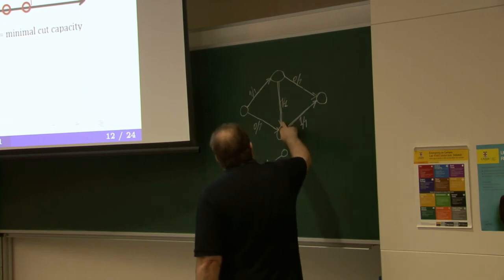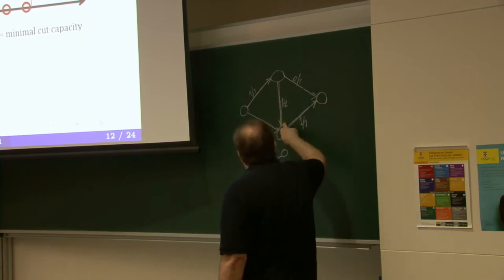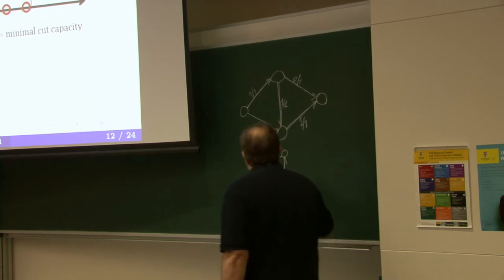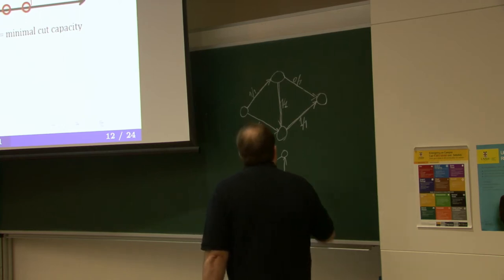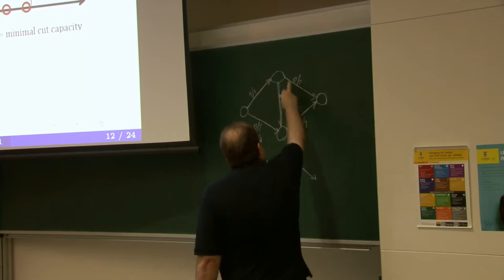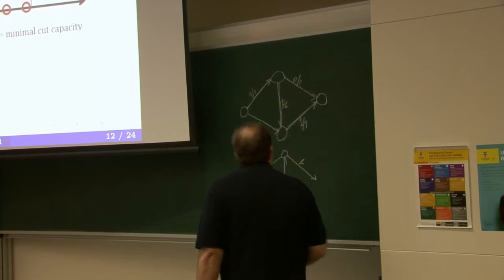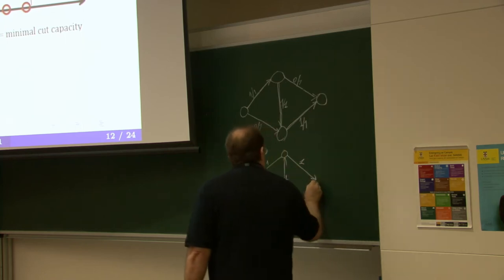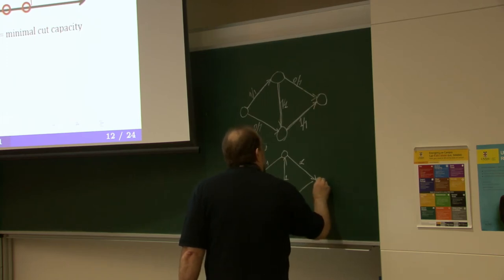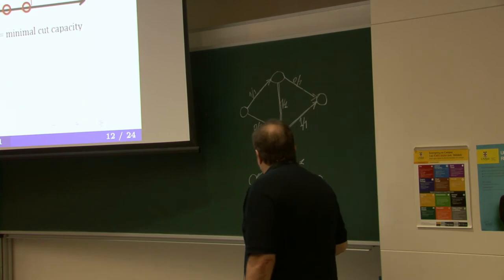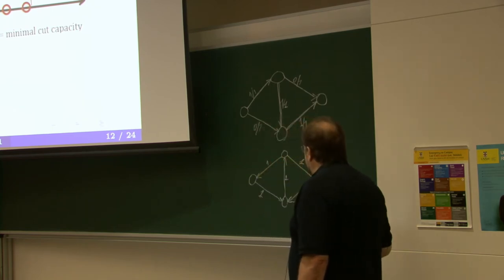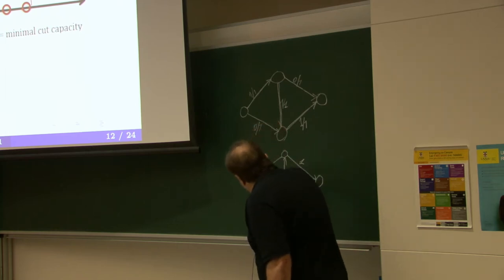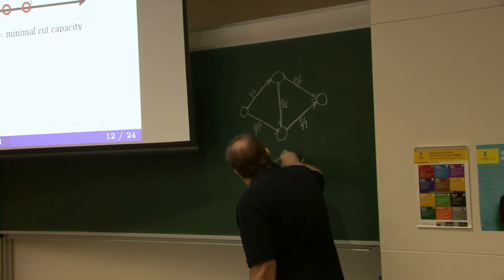In this direction, this edge disappears because it's fully saturated, but an edge in the opposite direction appears with capacity 1. This edge remains because we have 0 flow here, so capacity 1. And in this direction, this edge disappears. This is your residual network flow, and it's obvious that it has an augmenting path, which would be this path.